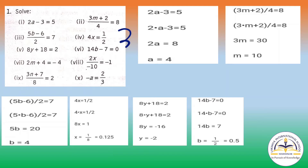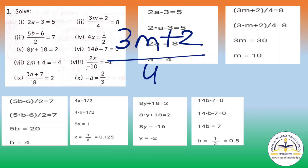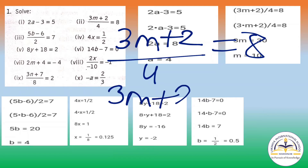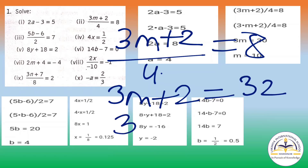Now we will solve question number 2: (3m + 2) by 4 equals to 8. We will write 3m plus 2 as it is. Now this 4 and 8 you have to multiply them, so 4 eights are 32.